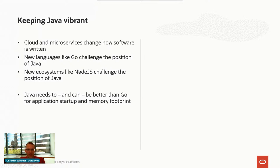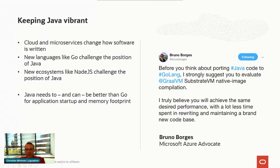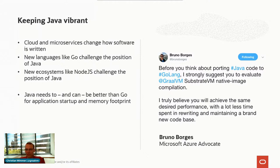You should never just believe me from Oracle when saying that, but other people say it too. I have one quote from a Microsoft developer advocate, Bruno Burgess, who tweeted: before thinking about going to Go for your service, look at what Java and native image can actually give you without leaving the Java ecosystem. The Java ecosystem is a very big and important thing — there are tons of libraries for about everything already available on Maven, and you want to keep using all of your libraries and dependencies.